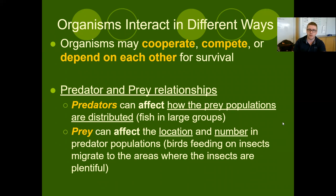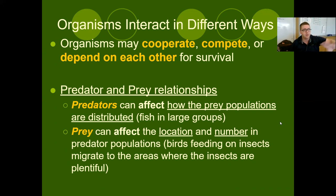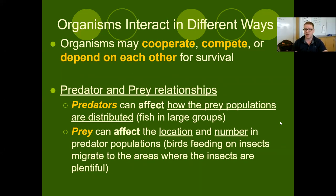We can also look at different types of relationships. Predator-prey is a huge one — not only do the numbers of predator and prey affect each other, but the location affects it too. If I'm a fox and I see a rabbit, I'm going to chase after it because I need that food source. Conversely, if I'm the rabbit and I see a fox coming, I'm going to run away. Each organism's distribution is codependent on what the other is going to do — that's predator-prey in a nutshell.